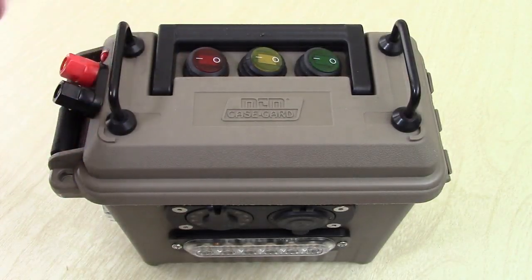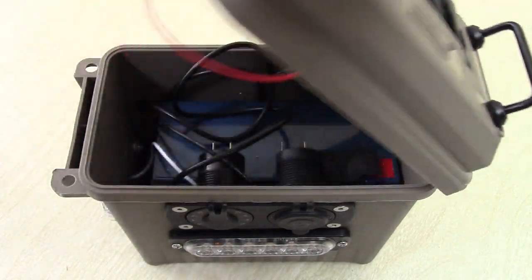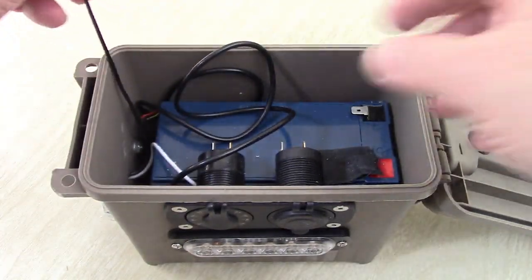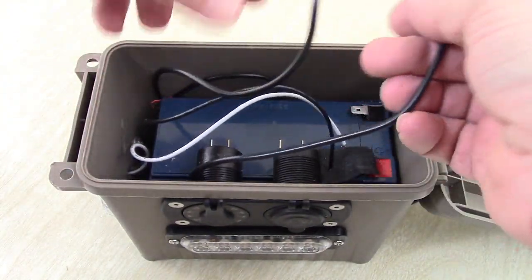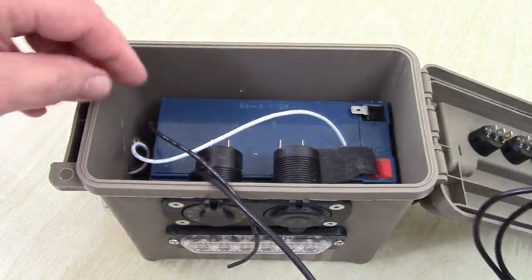So here's the ammo box. First thing I'm going to do is open it up. Get some of these wires out of the way a little bit. Like that. Pull that out of there.